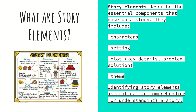Some of the first books and stories that you'll hear growing up are fairy tales, maybe Disney movies and things like that. Story elements that make up a story include characters, setting, and the plot. The plot is basically what happens in the story — it includes key details, the problem, the main issue or conflict, as well as the solution and the theme. These are the main story element building blocks we're going to talk about today.